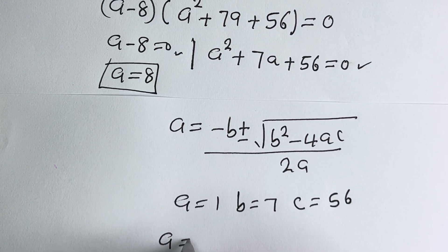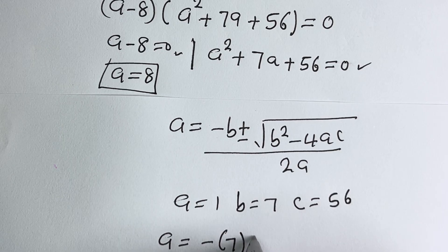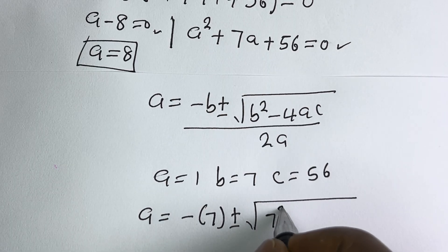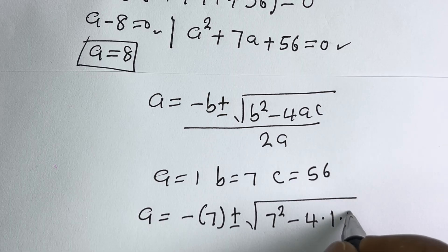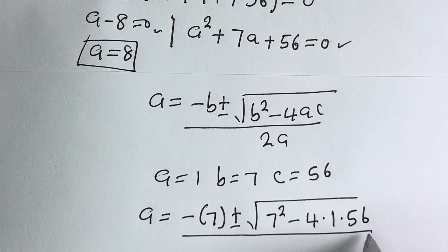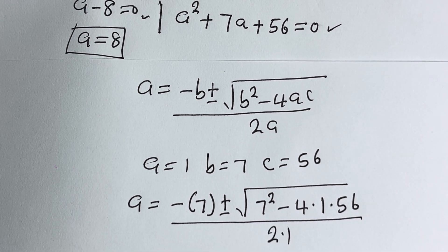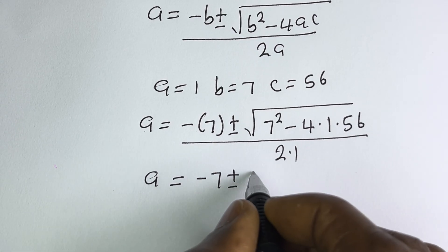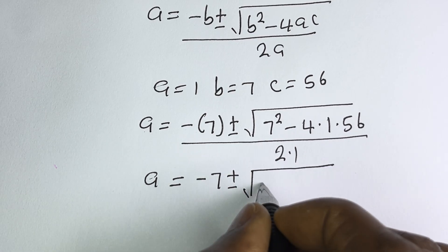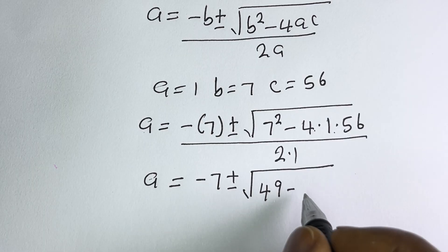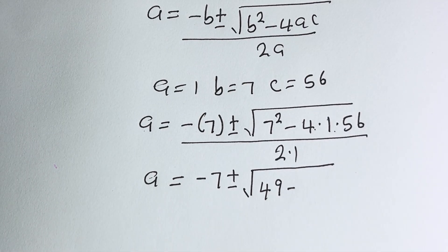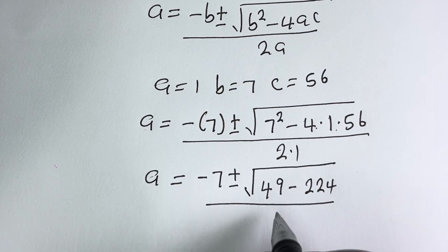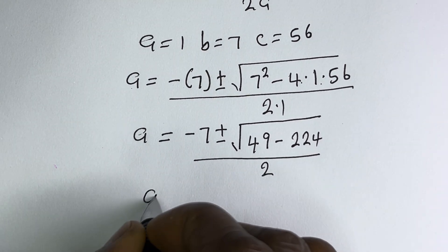Substituting, A equals minus 7 plus or minus square root of (7² minus 4 × 1 × 56), all divided by 2 × 1. This gives A equals minus 7 plus or minus square root of (49 minus 224), all divided by 2.